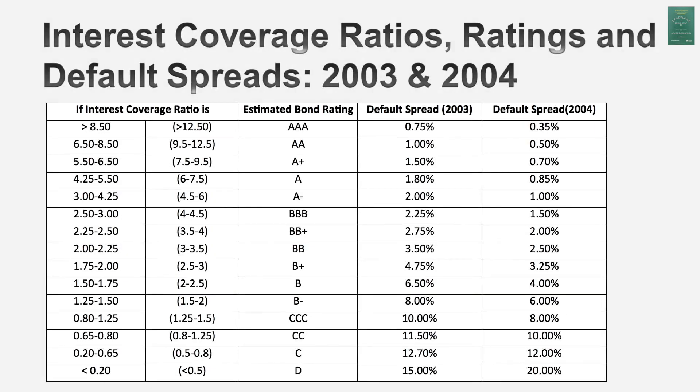My job with Embraer now is to convert that interest coverage ratio of 3.56 into a rating. Here's how I do it: I have a lookup table developed by looking at rated companies — I look up their interest coverage ratios and try to reverse-engineer what rating corresponds to a given ratio. I actually have two sets of tables: one for large market cap companies (market cap greater than five billion) and one for small market cap companies. Embraer in 2004 was a small market cap company, so I use that table. An interest coverage ratio of 3.56 yields a synthetic rating of A-minus for Embraer, with a default spread of one percent.